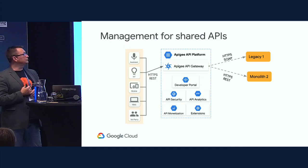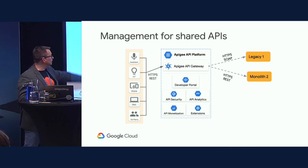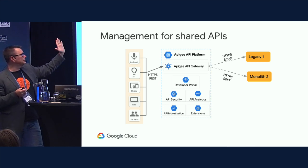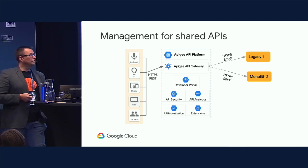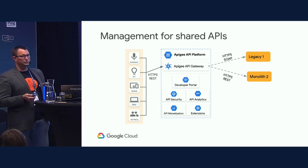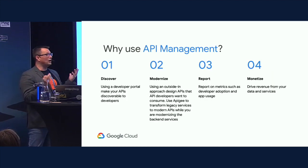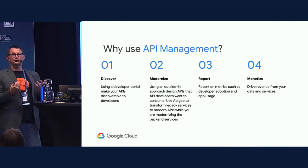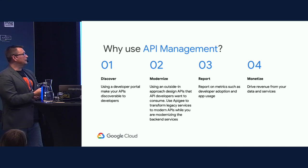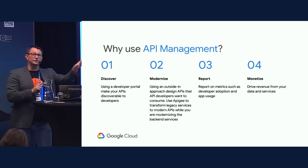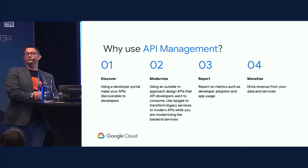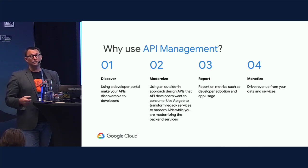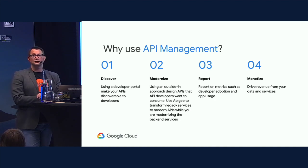Let's talk about management for shared APIs. In this picture, I've got a bunch of clients on the left consuming these APIs, the Apigee API platform sitting in the middle, and a couple of applications on the far right — a legacy application and a monolith application, one using SOAP and one using REST. Why do we care about API management? Because we want to discover these services and provide a uniform experience for developers. I don't want my customers to use SOAP for one service and REST for another. I want to make a modern, easy-to-use approach, get reporting information, and ideally monetize it.